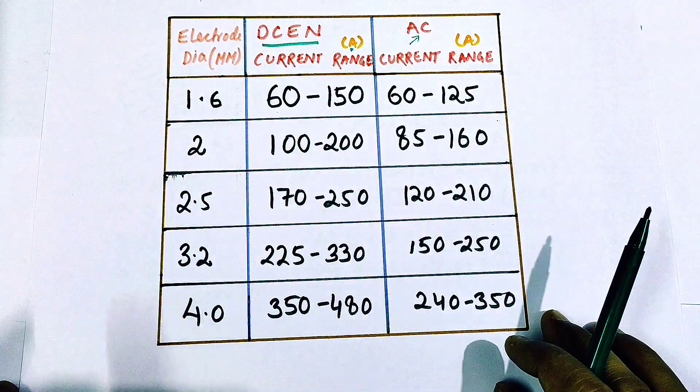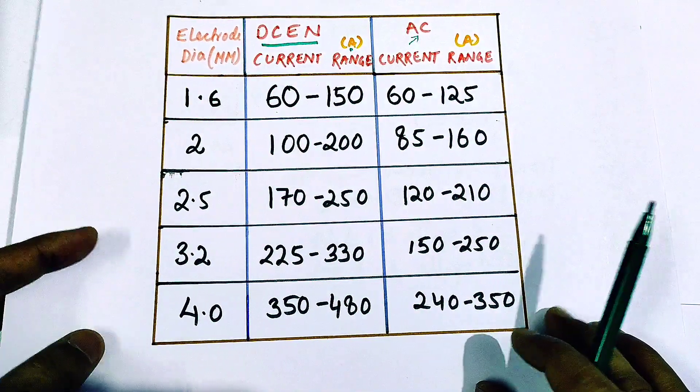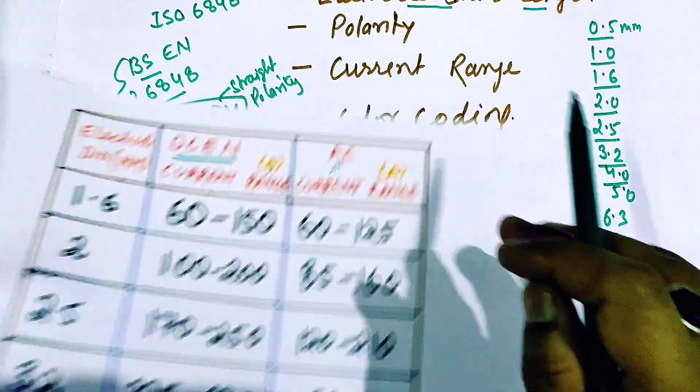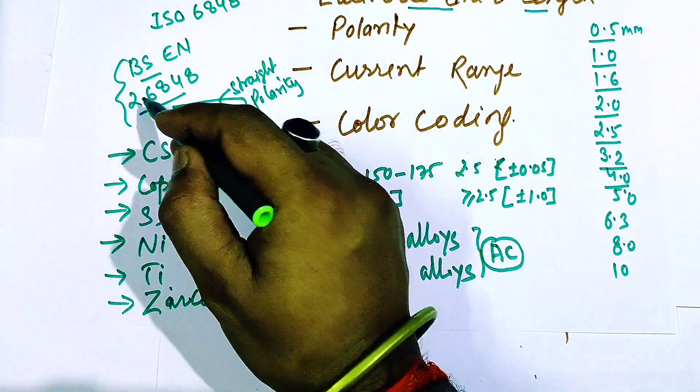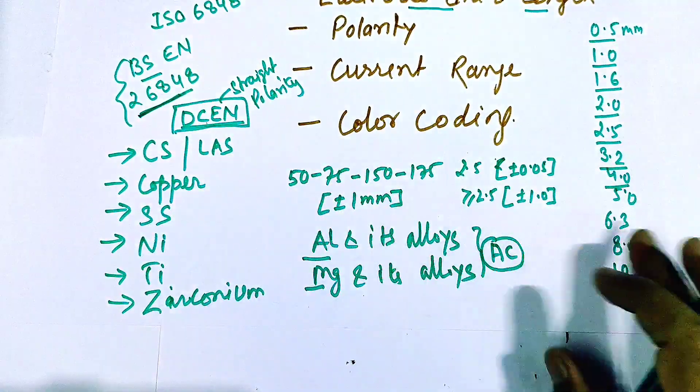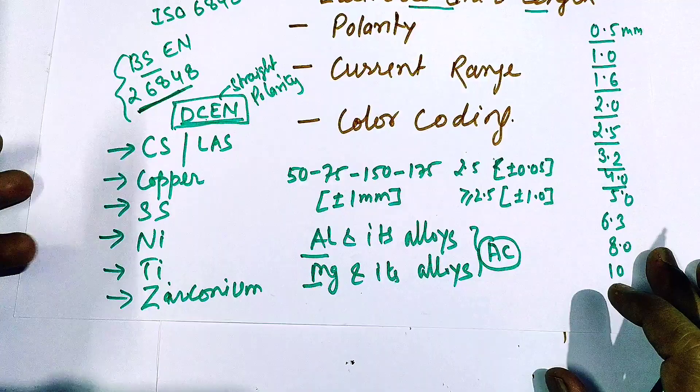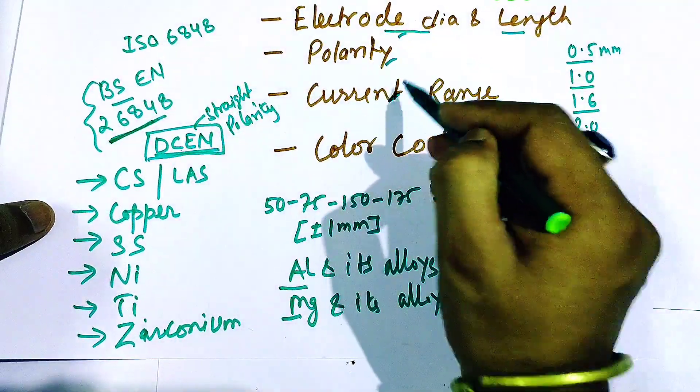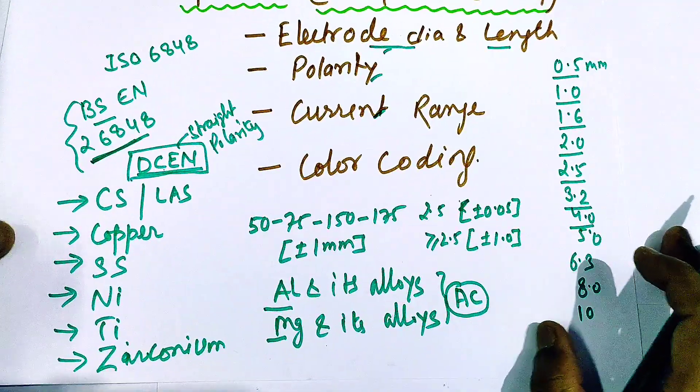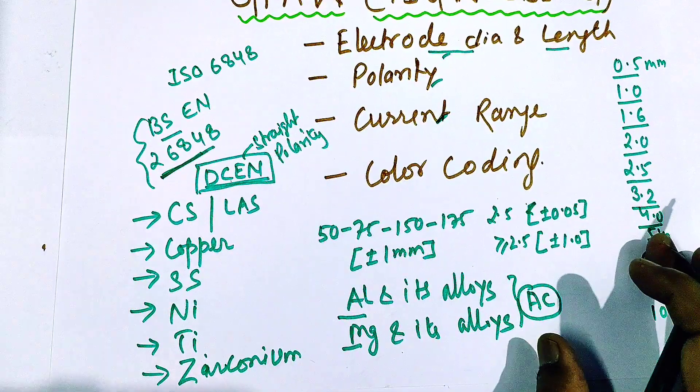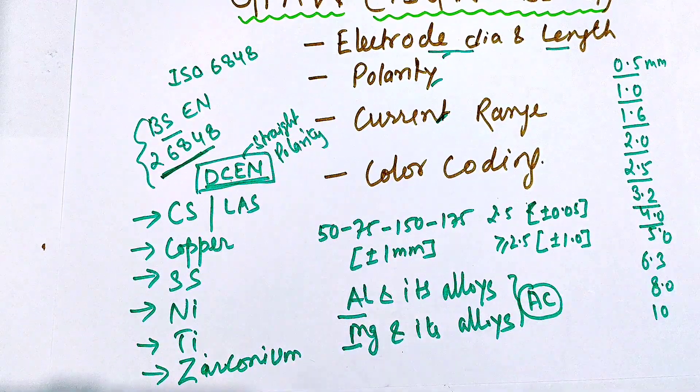So this is the current range, or this chart is for the current range. Again, I've taken this chart from this same code. Now friends, after learning these three things, we'll learn about the color coding.